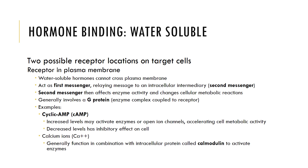Water-soluble hormones cannot cross the plasma membrane; their receptors are located on the plasma membrane. They act as a first messenger, relaying their message to an intracellular intermediate known as a second messenger. The second messenger can then affect enzyme activity and have a variety of impacts on cellular metabolic reactions. These generally involve a G protein, which is an enzyme complex coupled to a receptor.